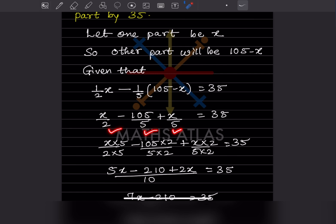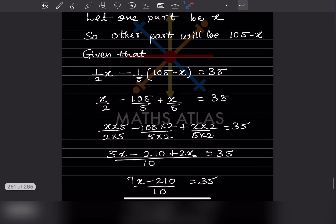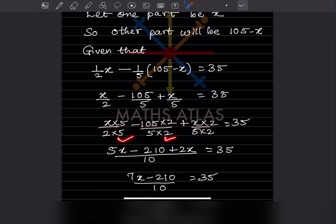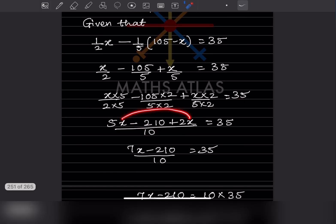The LCM of 2 and 5 is 10. Multiplying x/2 by 5 and x/5 by 2, we get (5x minus 210 plus 2x) divided by 10 equals 35. Combining the x terms gives 7x minus 210 over 10 equals 35.